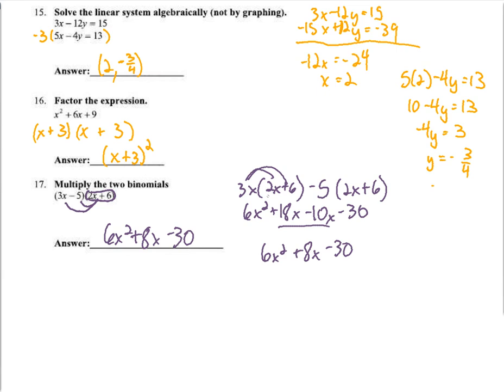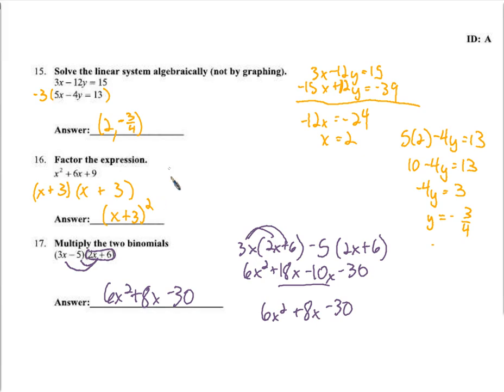And we're done — 6x squared plus 8x minus 30. We can't solve it because it's not equal to anything. I hope that was helpful and gets you ready for a re-test if you're planning on doing that. Come to me and ask me any questions you have. Thanks for watching.